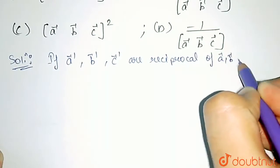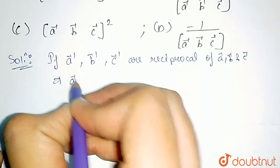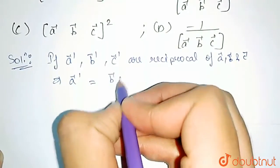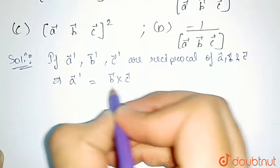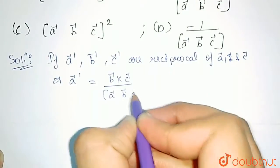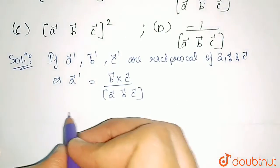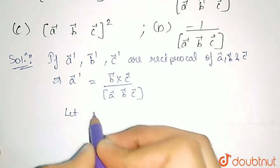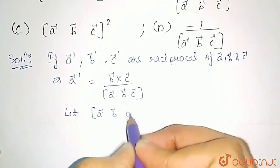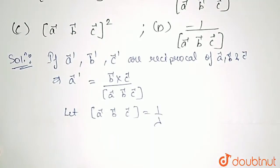B' vector and C' vector are reciprocal of A, B and C vectors. This implies A' vector would be equal to, in reciprocal systems, B cross C divided by the scalar triple product of A, B and C vectors. So now let us assume for a moment that the scalar triple product of A, B and C is equal to 1 by lambda.